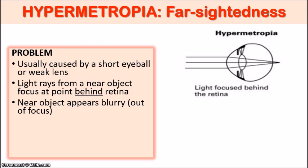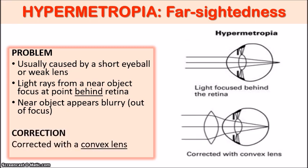People who are farsighted have a problem with seeing objects that are up close — these are the people that would require reading glasses. They would need a convex lens to correct this condition. The convex lens would be placed at the front of the eye to allow the light rays to converge more, so that the light can focus on the retina. So the convex lens is the way in which you correct hypermetropia — this is where the individual would need glasses when reading, looking at their cell phone, or any object that is up close. That is the difference between myopia and hypermetropia.